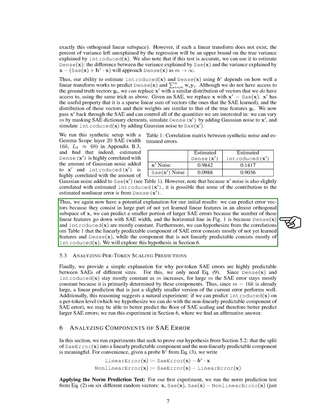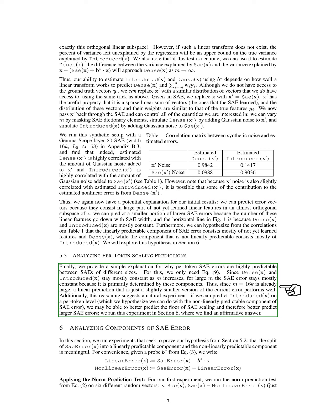Section: Analyzing Per-Token Scaling Predictions. In this section, we analyze the predictability of per-token SAE errors across different sizes. We find that as the size increases, certain components of the SAE error remain mostly constant, allowing us to make accurate predictions based on previous errors. Specifically, since we are already working with a large size, a simple linear prediction of the current error works well. If we can predict the introduced component of the error on a per-token basis, we might improve our predictions for larger SAE errors.